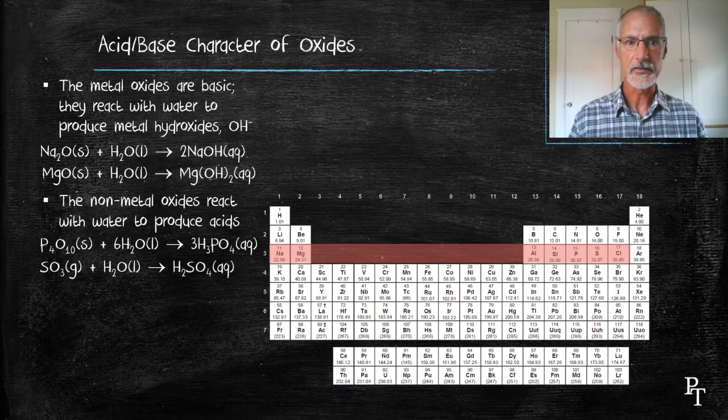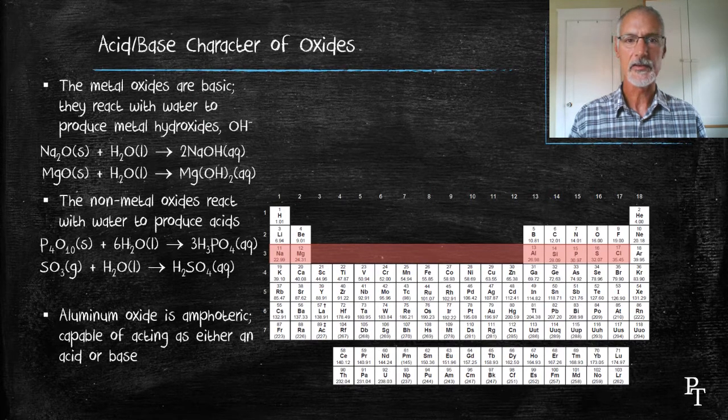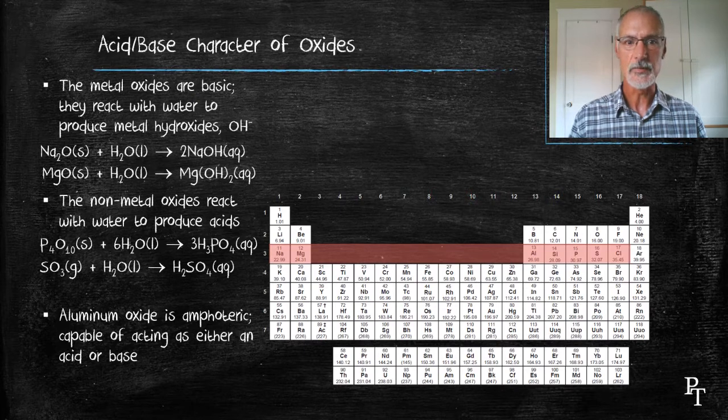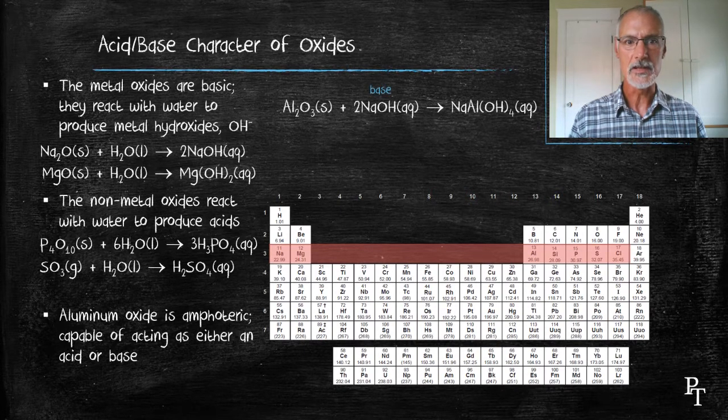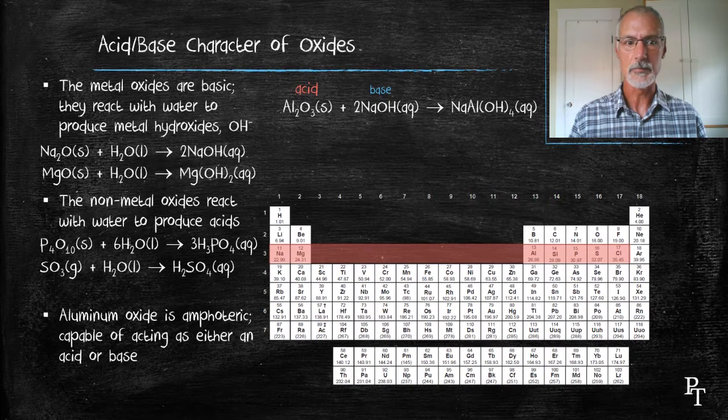At some point, there's a division, a switch, from the acid nature to the base nature, and that happens at aluminum oxide. Aluminum oxide is considered to be amphoteric, meaning it can behave both as an acid and a base. Here in my first example, aluminum oxide is being mixed with a base. In this situation, the aluminum oxide is acting as an acid, as the two react to produce a neutral compound.